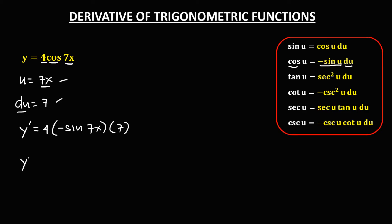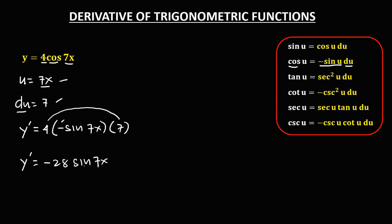So y prime is equal to — multiply this number, so 4 times 7, that's 28. Since we have this negative, so negative 28, then sine 7x.